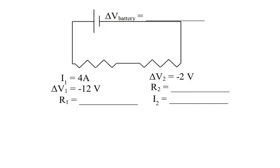We know a few things about the circuit and want to figure out the rest. The current through the first resistor is 4 amperes. Remember that charges flow from positive to negative on the battery, so that tells us the direction of the current. The first of Kirchhoff's rules is the junction rule, which says the current entering a junction has to equal the current leaving it. Since there are no junctions between the two resistors, all the current through the first resistor must also go through the second. So from Kirchhoff's junction rule, the current through the second resistor has to be 4 amperes.